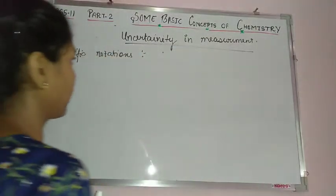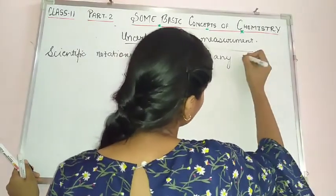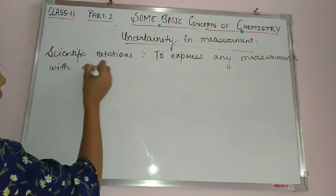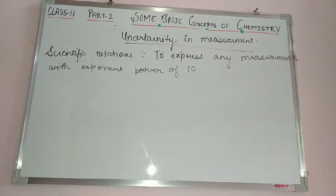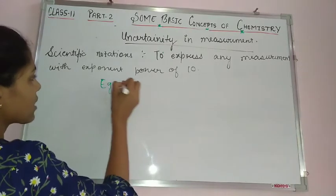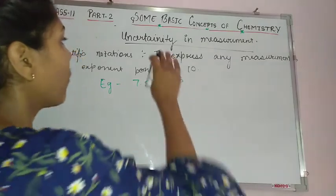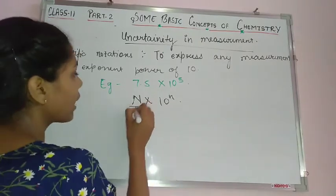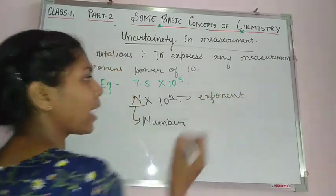The definition of scientific notation: to express any measurement using an exponent power of 10. We write it in the form N × 10ⁿ, where capital N is the number (coefficient) and small n is the exponent. This is our scientific notation.